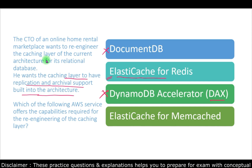ElastiCache for Memcached is a Memcached-compatible in-memory key-value store that can be used as a cache or data store. However, ElastiCache for Memcached does not support replication and archival snapshots, which is the key requirement here — the CTO wants the caching layer to have replication and archival support. So Memcached is ruled out, and ElastiCache for Redis is the correct answer for this question.